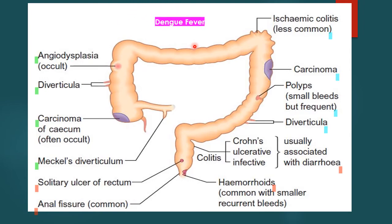I must remind you of the important condition of dengue fever as a cause of lower GI bleed. This is especially so in children and young adults. In our country where dengue is endemic, this condition should always arouse suspicion as a cause of bleeding.